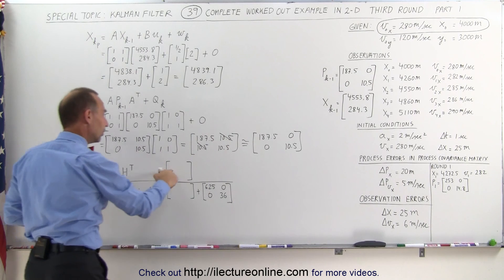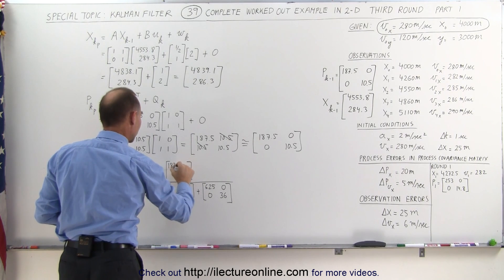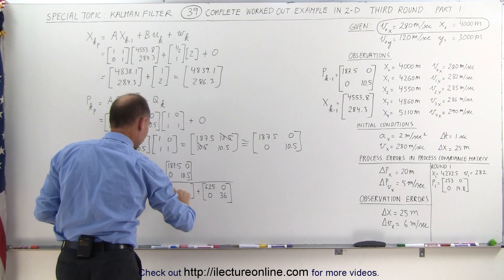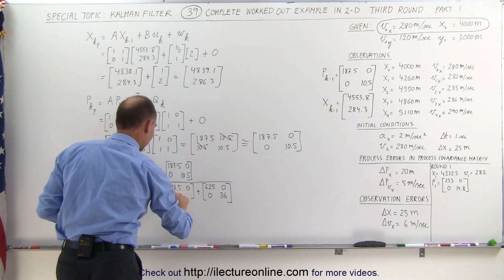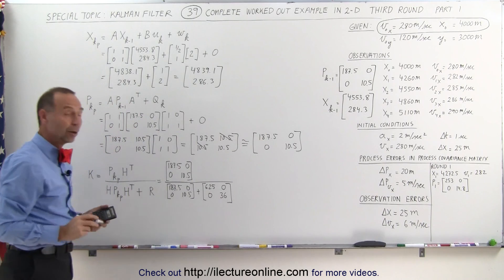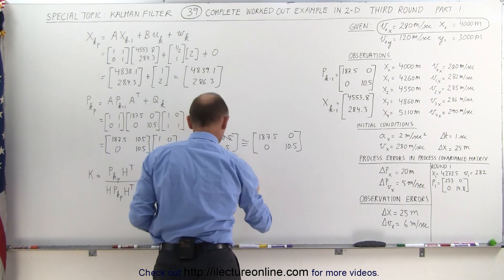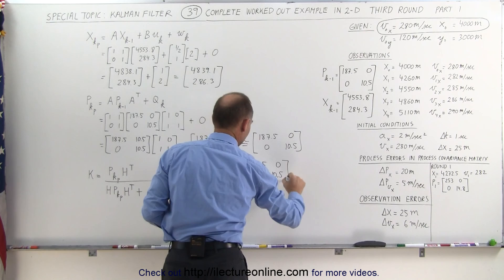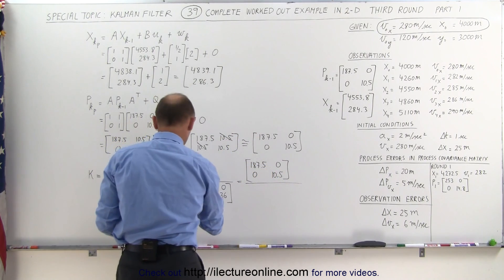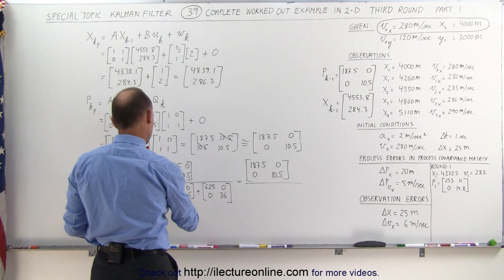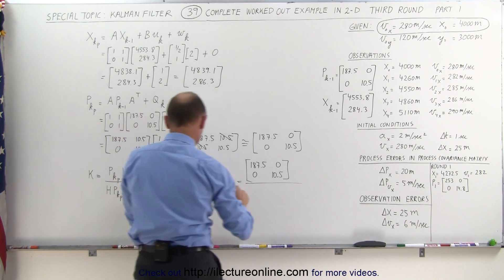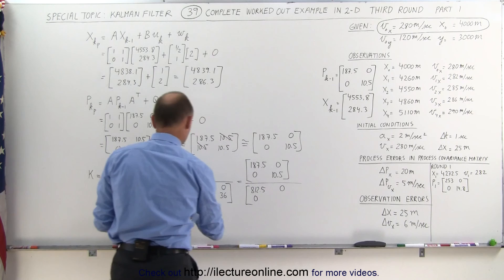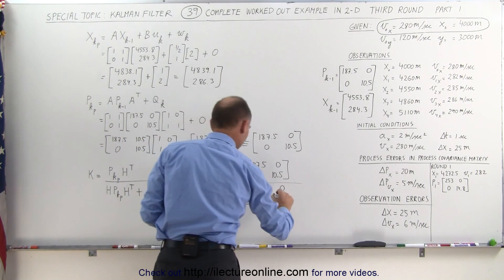Now we can plug that in here, so this now becomes 187.5, 0, 0, 10.5, and again here, 187.5, 0, 0, and 10.5. And all we have to do is add those two in the denominator, so the numerator, 187.5, 0, 0, 10.5. And in the denominator, we simply add those together. 625 added to that, we get 812.5, that's 0, this is 0, and 10.5 added to 36 is 46.5.